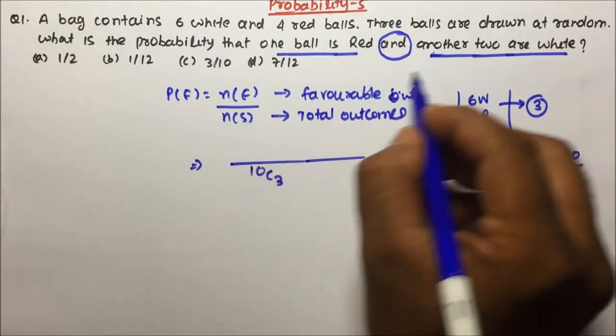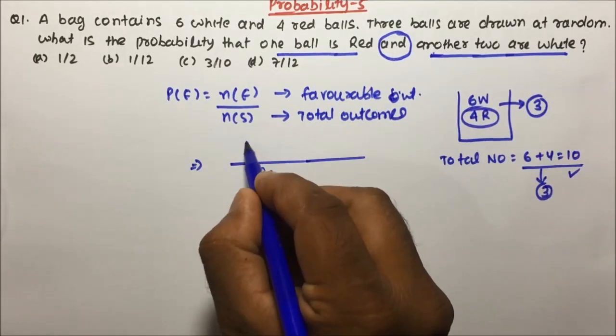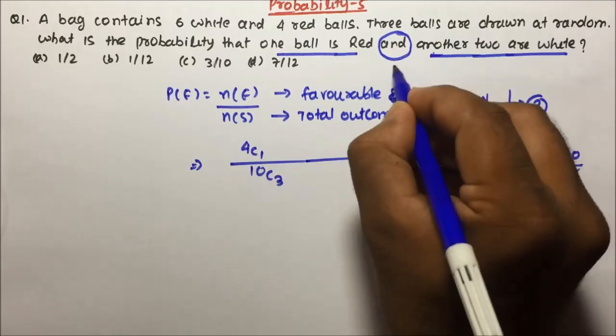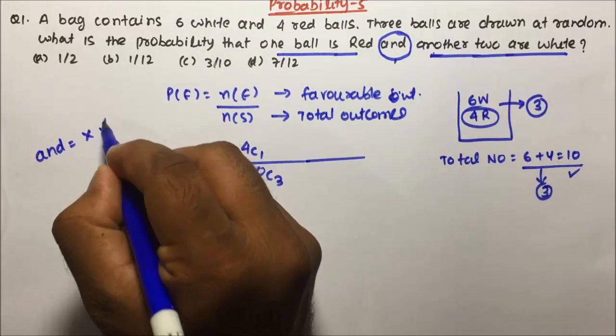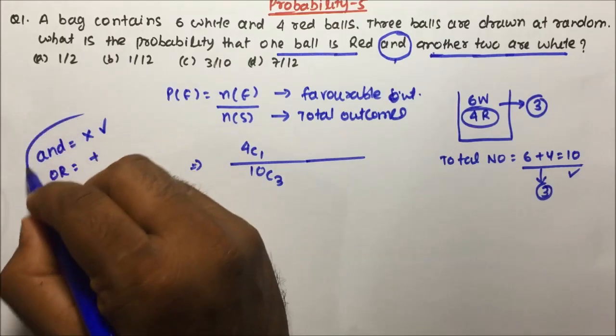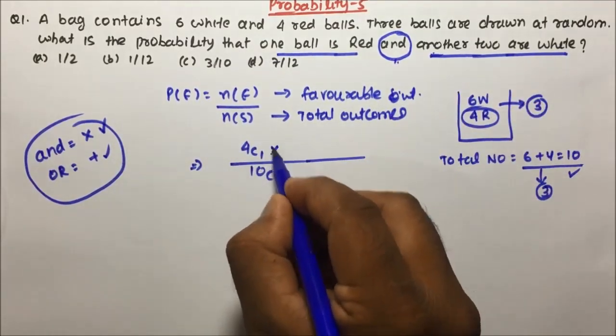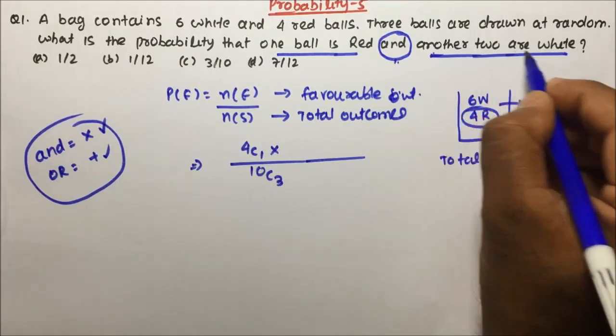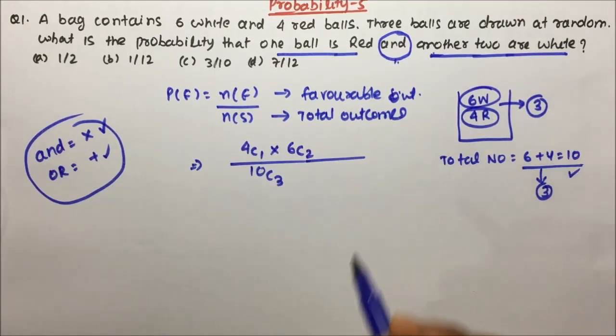Then one ball should be red. If you want one red ball, then take from red. If in the question 'and' is there, then use multiplication sign, and if 'or' is there, then use addition sign. So here it is 'and', so use multiplication. Now another 2 has to be white, so select from the white, so 6C2.